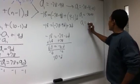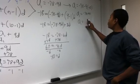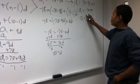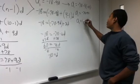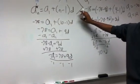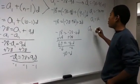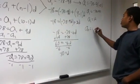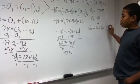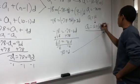So a sub 1 equals negative 78 plus 90, which equals 12. Now we can write out our final equation: a sub n equals 12 plus n minus 1 times negative 10. This is our arithmetic sequence equation.